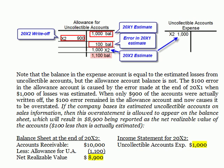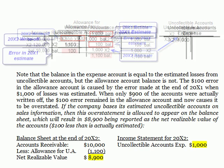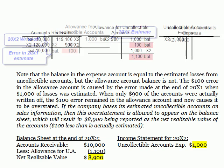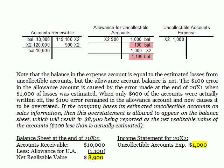Since we overestimated the write-offs by $100, we have a credit balance remaining in the account. Had we underestimated them and the write-offs were, say, $1,100, a $100 debit balance would be left in the account. Since our estimate will never be perfect, this will be the norm. We should expect that there will be a debit or a credit balance — hopefully a small one — left in the allowance account at the end of every accounting period. There are two approaches that are used to handle this.